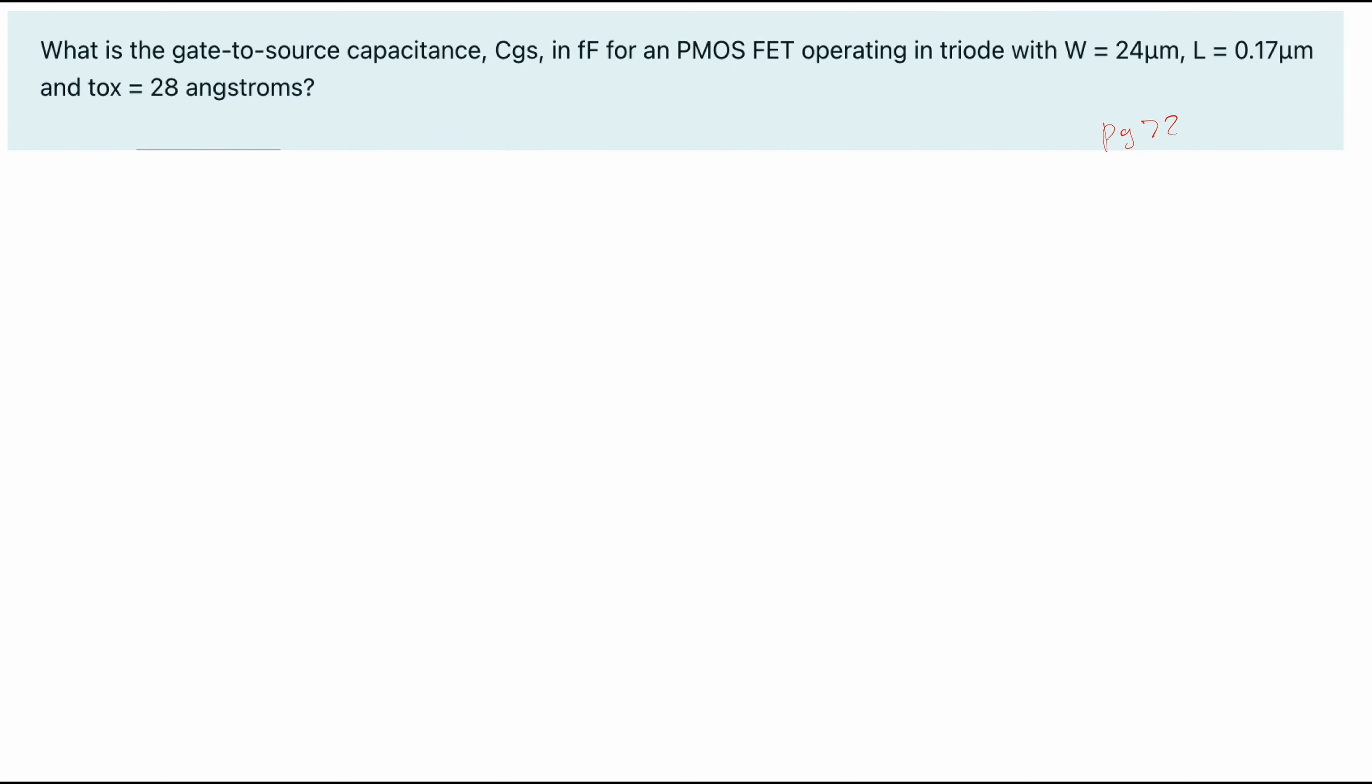So let's write out an equation for this. Now it's important to note a few things before you start because the problem might be a little different. Notice how we're operating in triode. We're also operating with our CGS, that's what we want to find. So on page 71, this gives us a good in triode equation for our CGS.